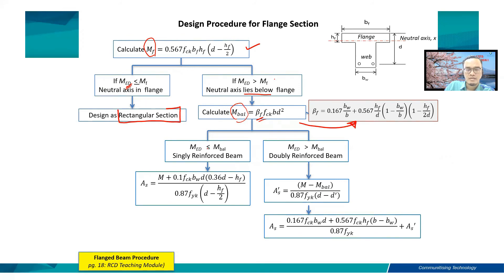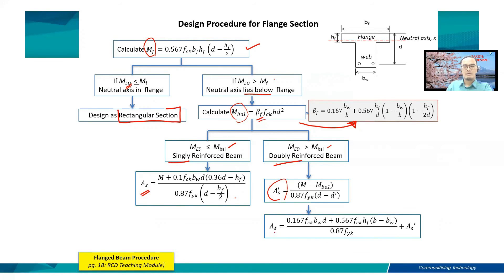If M_ED is less than M_balance, it is singly reinforced and we calculate the total area of tension reinforcement required using these equations. If M_ED is greater than M_balance, compression reinforcement is required — making it a doubly reinforced beam. We then need both A_S' and A_S based on the respective equations.